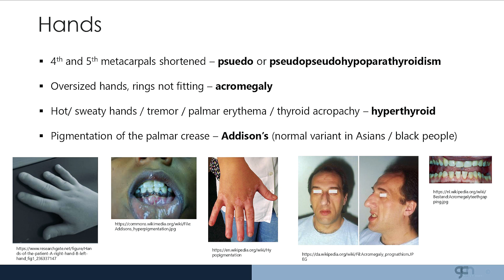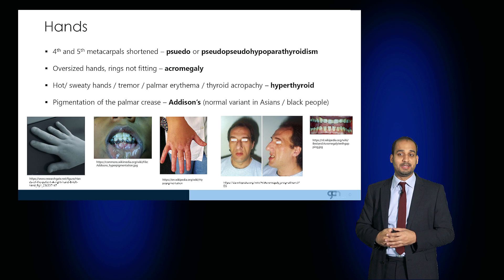You can see evidence of shortened fourth and fifth metacarpals, which may suggest pseudo-hypoparathyroidism. You can see pigmentation in the oral cavity suggestive of Addison's. In the adjacent image of the hand you can see vitiligo, which is also associated with Addison's. This gentleman has prognathism, protrusion of the lower jaw, along with enlarged supraorbital ridges and an enlarged nose suggestive of acromegaly, as well as widely spaced teeth.